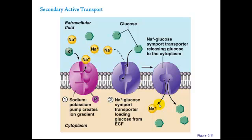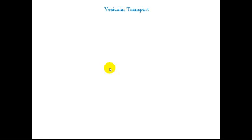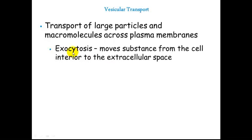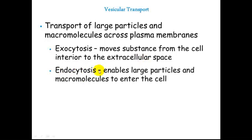Simple diffusion, facilitated diffusion, and active transport only function for things that are relatively small — small enough to pass through a protein. However, many substances either created by or needed by cells are too large to pass through a transmembrane protein. For those, we have to look at vesicular transport — the transport of large particles and macromolecules across a plasma membrane. There are two ways this can occur: exocytosis, which is exiting the cell, and endocytosis, which is movement towards the inside of the cell, allowing large particles and macromolecules to be brought in.